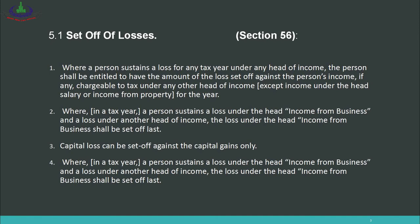Section 56, Number 1: Where a person sustains a loss for any tax year under any head of income, the person shall be entitled to have the amount of the loss set off against the person's income. This means if a person has a loss in any year — whether in business or from other income — they have the right to set it off against their income. For example, if a person has a business loss of 10 lakh and income from other sources of 15 lakh, then after set-off only 5 lakh remains as taxable income.